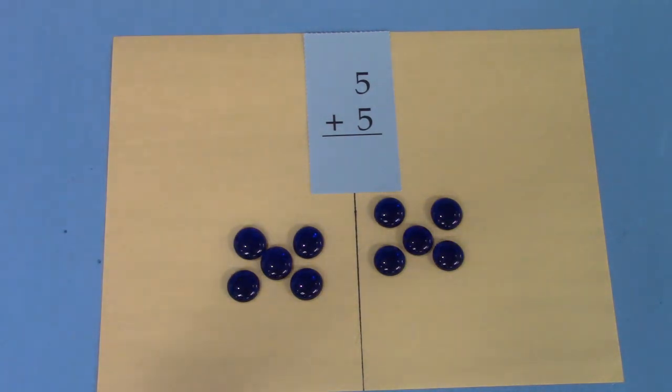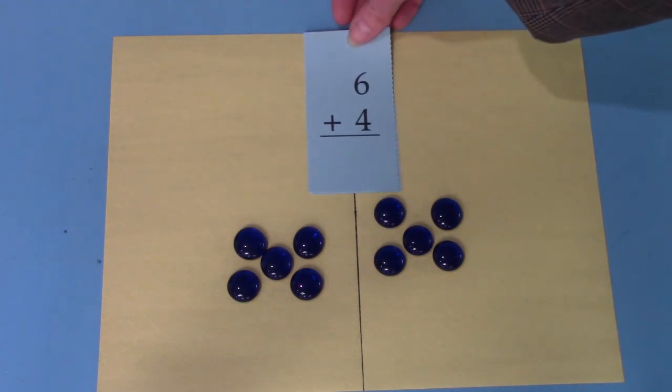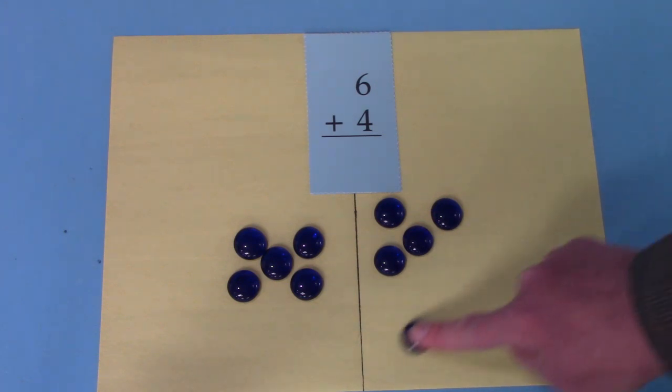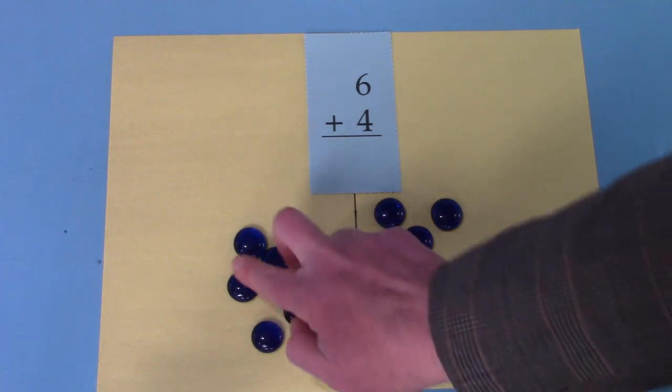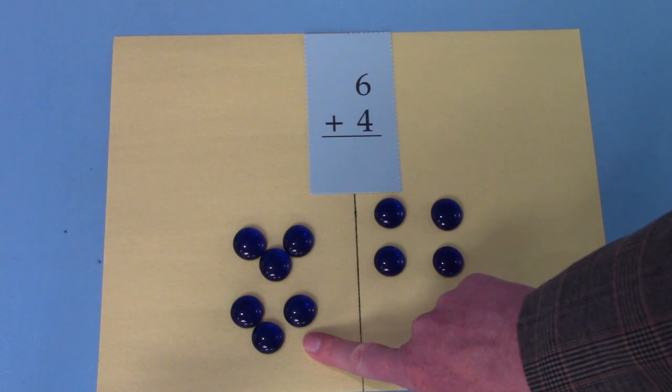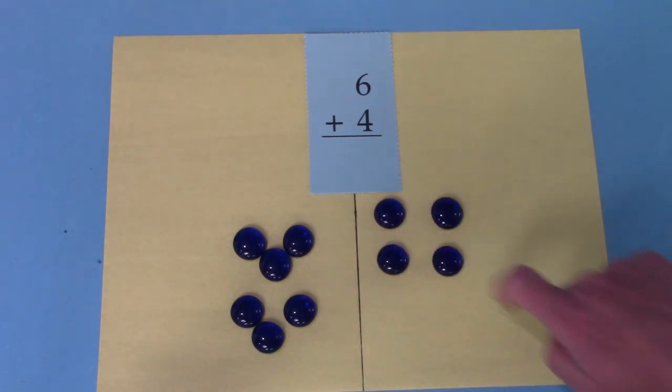Let's look at another fact. We have six plus four. We have ten gems here. So we're just going to move one over so that we have six plus four. Six, seven, eight, nine, ten.